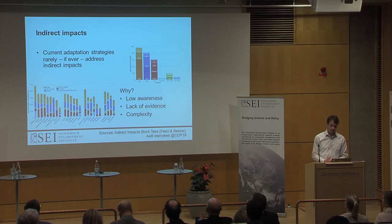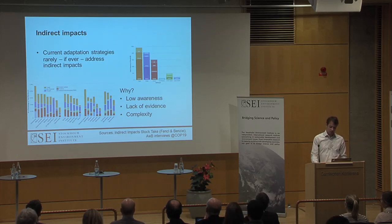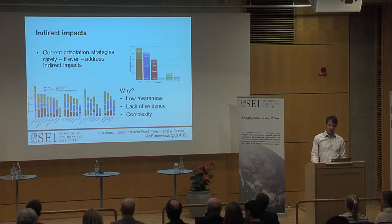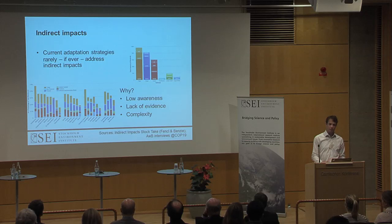This is what lies behind the idea of an alternative climate change index based on indirect impacts. We've done some work looking at current adaptation strategies and whether they deal with these indirect impacts — the short answer is no, they don't. One of our projects, Adaptation Without Borders, is trying to address this. We identified three main reasons why these issues are lacking: low awareness itself, which is what this index is trying to address; a lack of evidence and research on the topic; and the complexity of risks and impacts that cross boundaries. This index is about simply raising awareness of the issues.